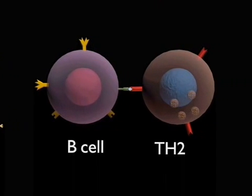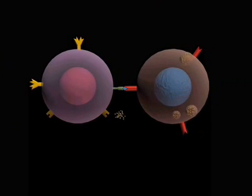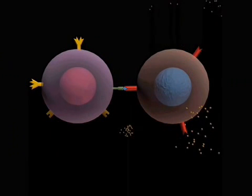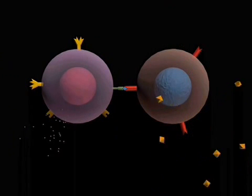Presentation of the antigen to the Th2 cell causes vesicles within the T-cell to fuse with the cell surface and release cytokines, including interleukin-4, which then binds to the interleukin-4 receptors on the B-cells.